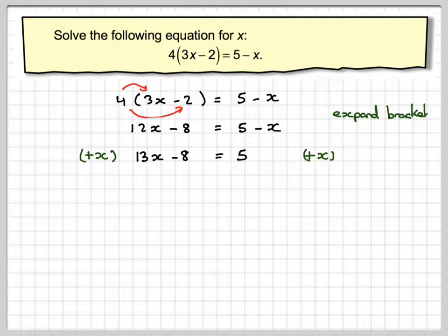The opposite of subtracting 8 is to add 8 to both sides. So adding 8 to this side we're going to get 13x and then 5 plus 8 gives me 13.